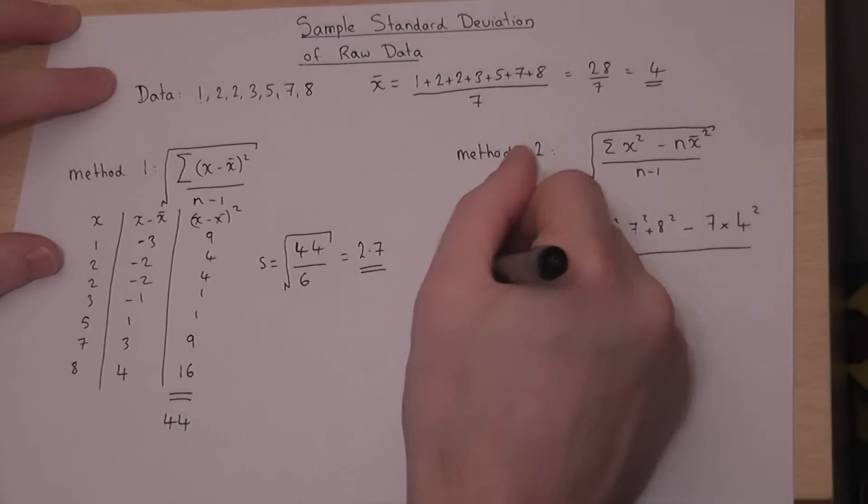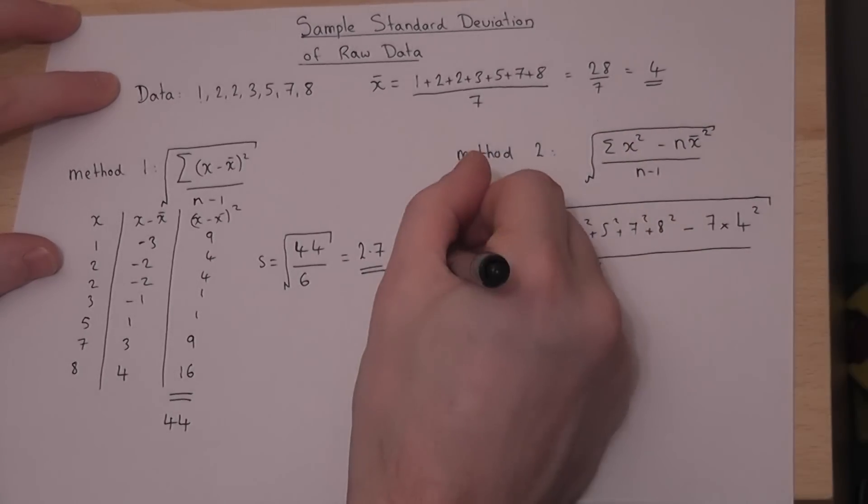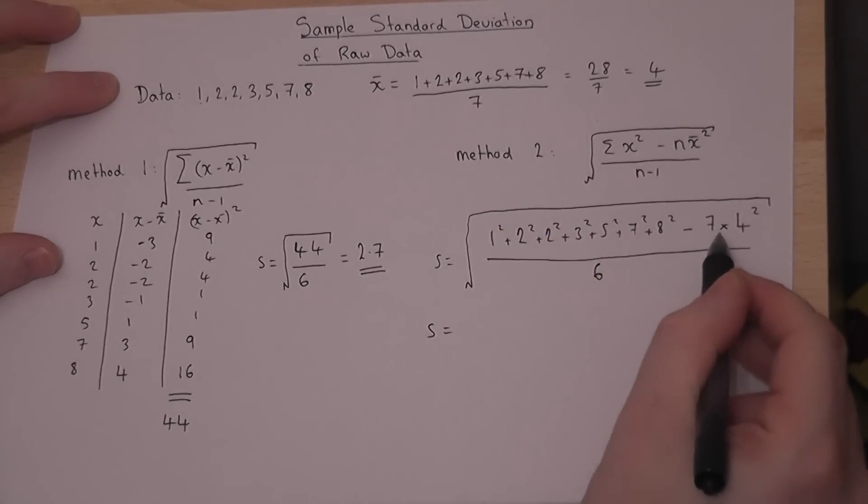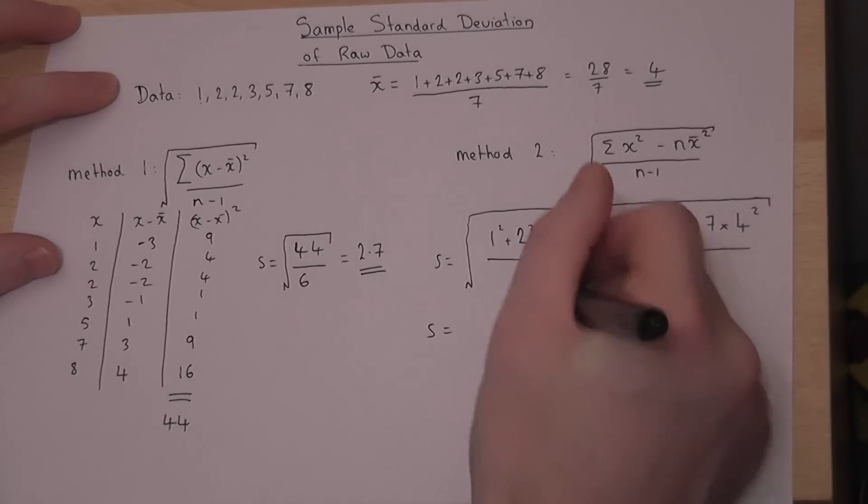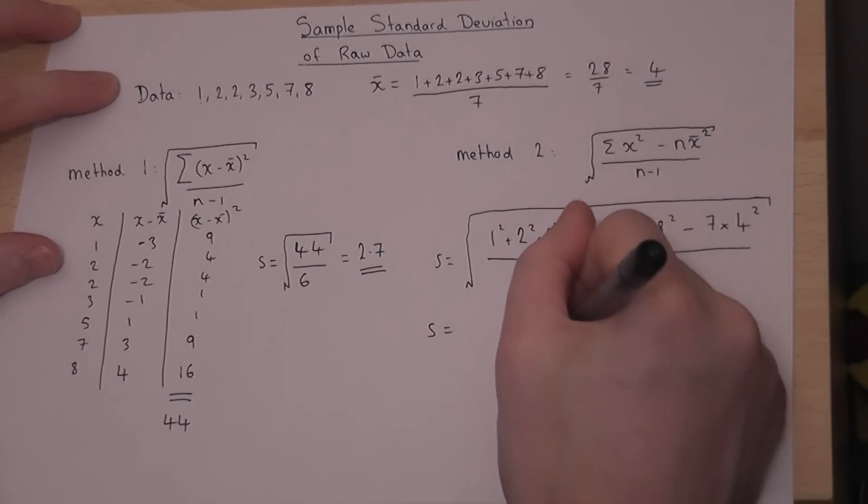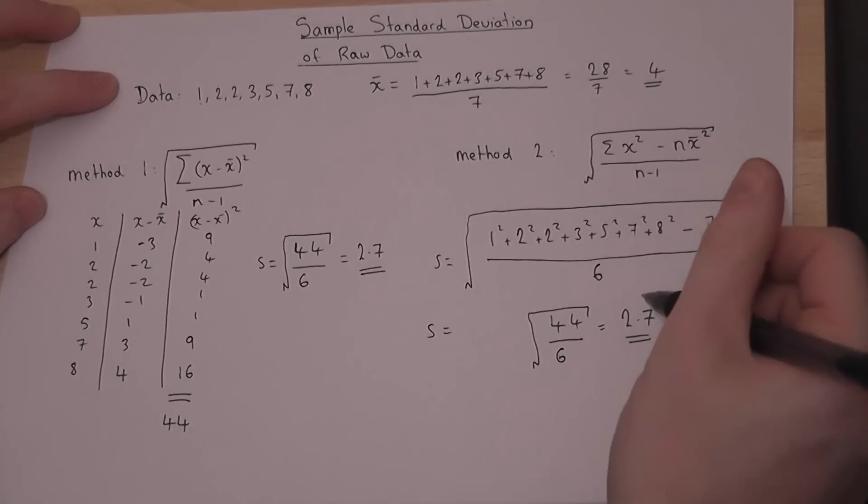Now, if you work out what the top line is, then it actually becomes 44 over 6, which, if we then square root, gives the same value as in the previous method.